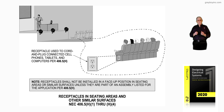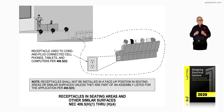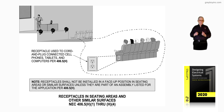The note says when these receptacles are installed, they shall not be installed in a face-up position in the seating area or similar surfaces unless they are part of a listed assembly by the manufacturer and the application does comply with NEC 406.5. Notice the armrest of the individual in the illustration — you couldn't have a receptacle face-up there like you've seen in times past.